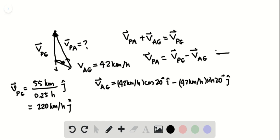Now we can go back to the equation and plug in what's asked. VPA equals VPG, let's substitute 220 kilometers per hour j-hat, minus VAG.